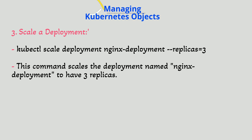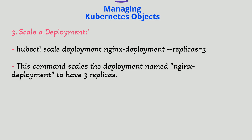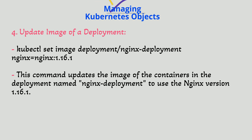3. Scale a deployment. `kubectl scale deployment nginx-deployment --replicas=3`. This command scales the deployment named nginx-deployment to have 3 replicas.